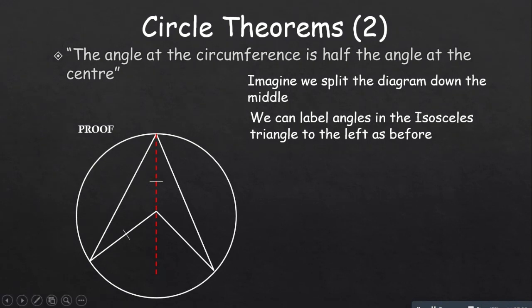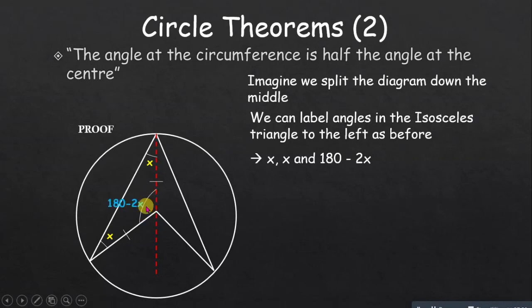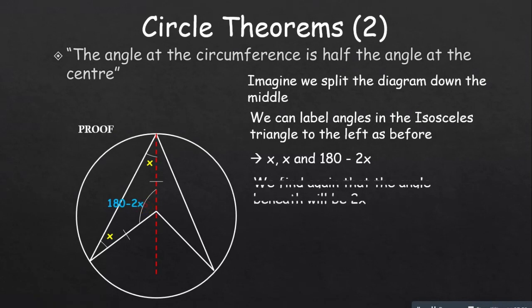Since two sides of each triangle are radii and therefore equal, these are isosceles triangles and the base angles are equal. We label the base angles of the left triangle as x and x. To find the apex angle of that triangle, we take 180 minus 2x, giving us that angle.